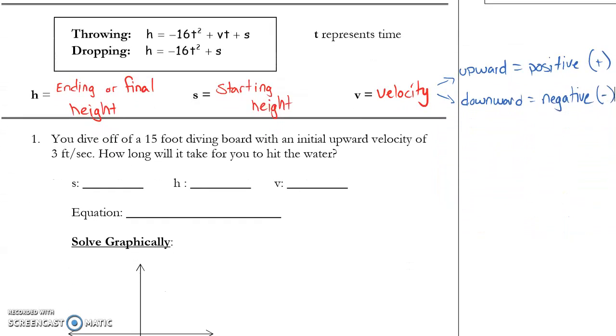In this video, the vertical motion model is represented by these two equations: h equals negative 16t squared plus vt plus s or h equals negative 16t squared plus s. These are not equations I'm going to ask you to memorize. They will be provided for you on tests, quizzes, and the final exam.